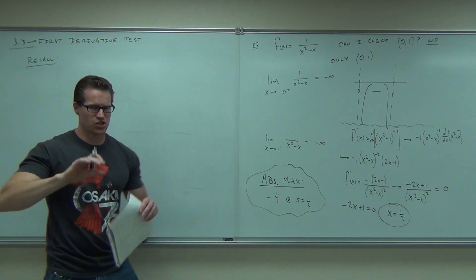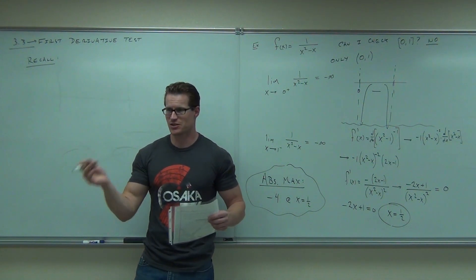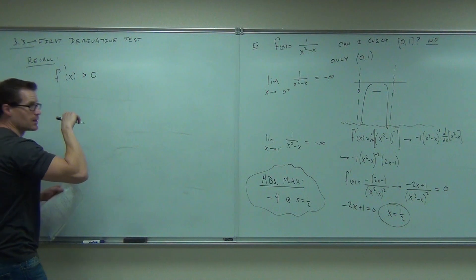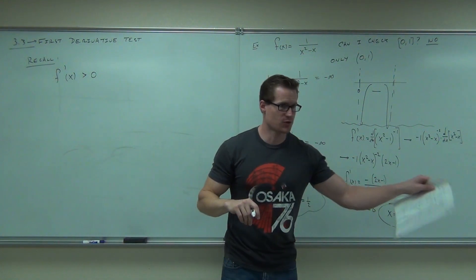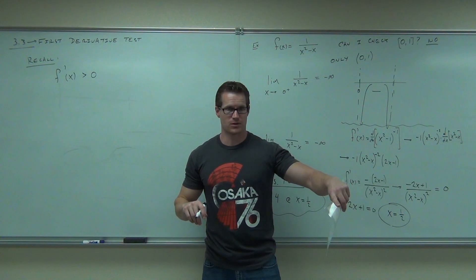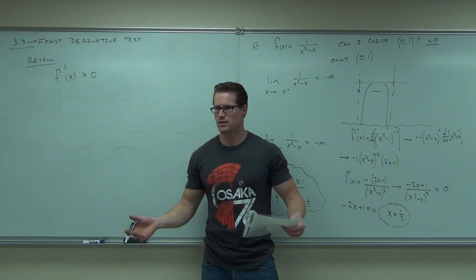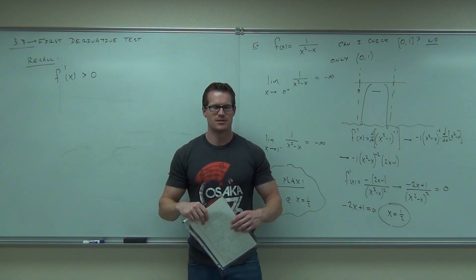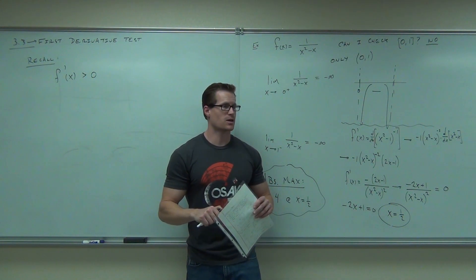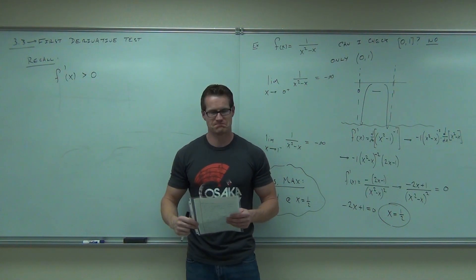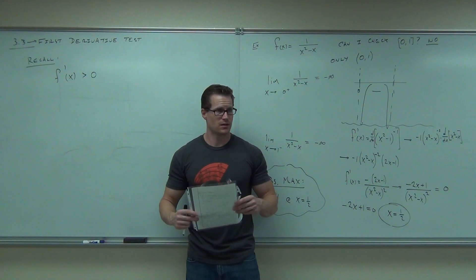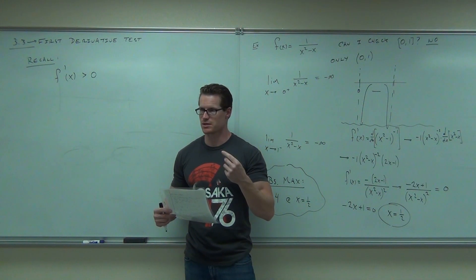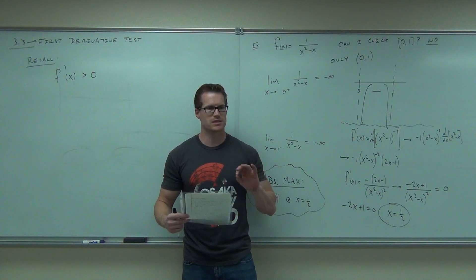Recall something for me. We just did this on Wednesday. What does this mean? First derivative. Okay, it's the first derivative and it's positive. You're both right. What's it mean? No. Oh no. It has nothing to do with concavity. Nothing to do with concavity at all. First derivative has to do with the slope, or the rate of change of your line. So it would tell you increasing or decreasing. That's what it would tell you. Concavity, no. That's second derivative.